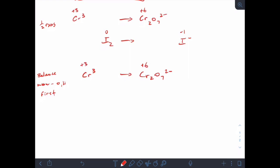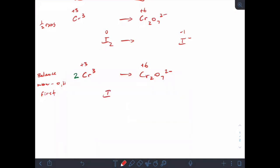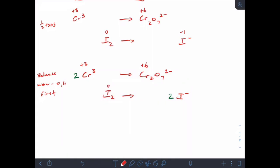So I've got two chromiums on the right, one chromium on the left, so I'm going to balance that. And my other half reaction is I have I2 going to I minus. So I'm going to balance my iodines in that way.